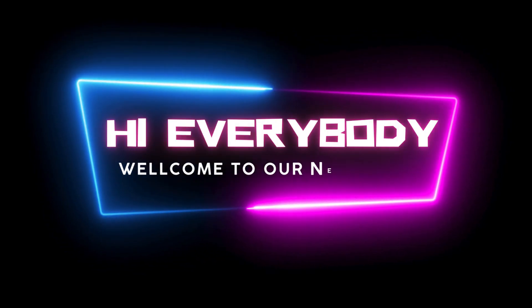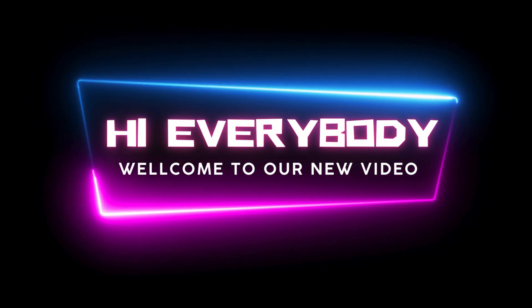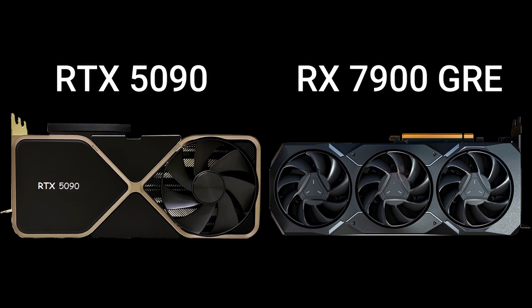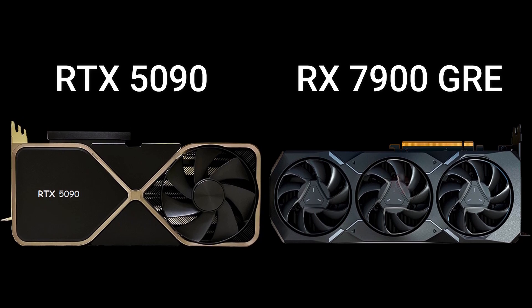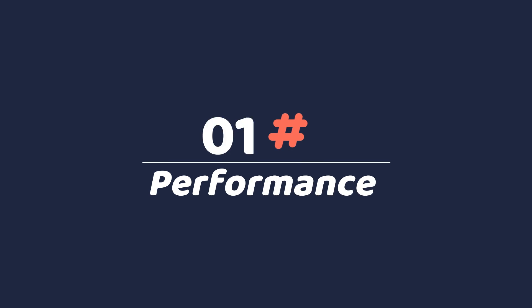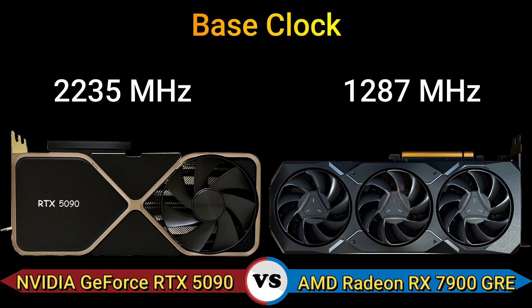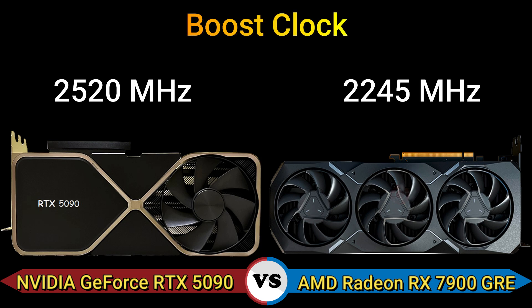Hi everybody, welcome to our new video. Today I will compare two GPUs. Let's start with performance. Base clock: 2235 MHz and 1287 MHz. Boost clock: 2520 MHz and 2245 megahertz.